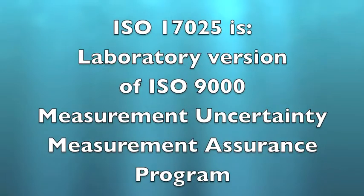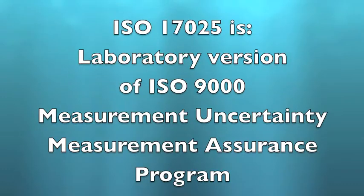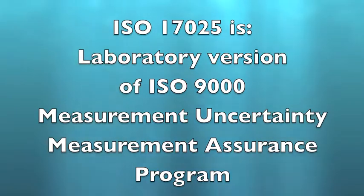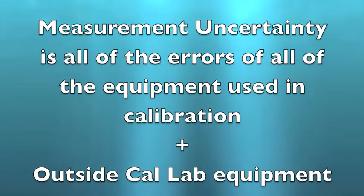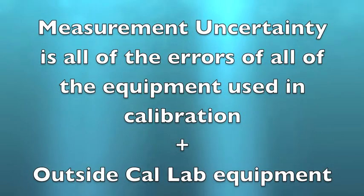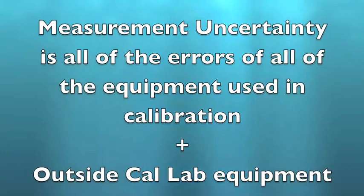You have learned that ISO 17025 is a laboratory version of ISO 9000 that emphasizes calculating the measurement uncertainty of all measurements made in calibrations and tests, as well as having a measurement assurance program. You have also learned that measurement uncertainty calculates all errors for all equipment used in the calibrations, traced all the way to the international standards of measurement, including outside lab equipment and any other equipment used by any other lab in the chain.